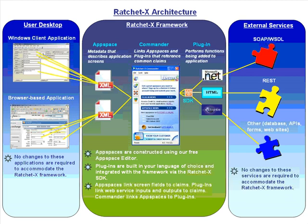To summarize, the Desktop panel represents the applications with which you interact every day at the desktop, and the External Services panel represents all the various sources of information you want to integrate into the applications you use. This leaves the center panel, which is aptly named the RatchetX framework.